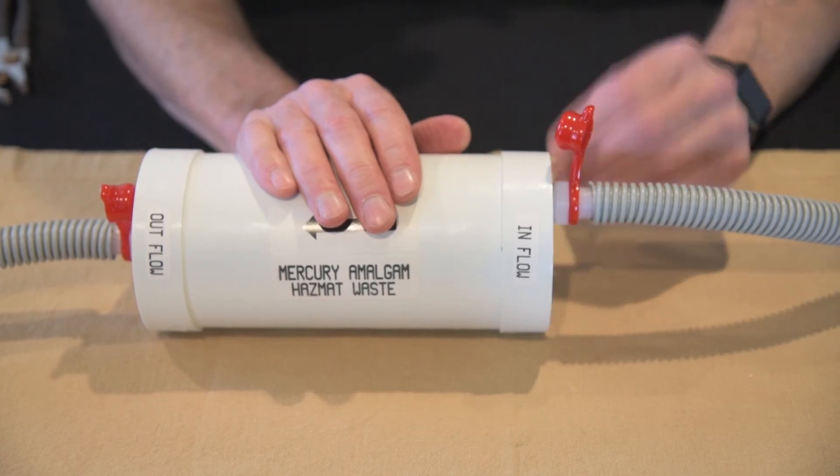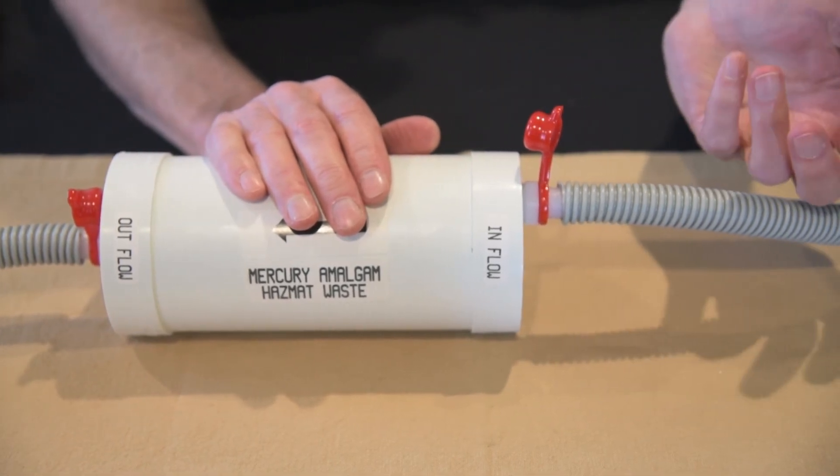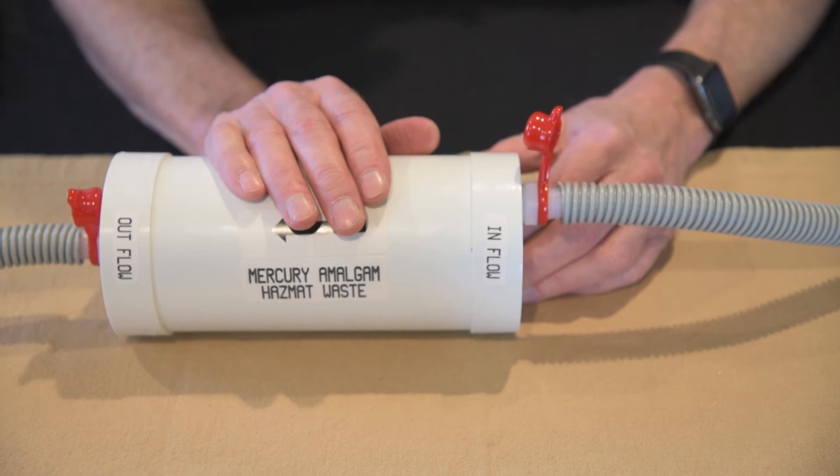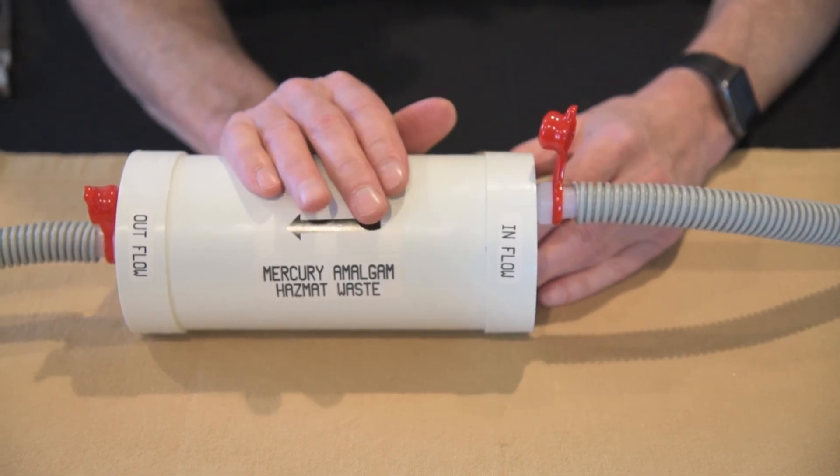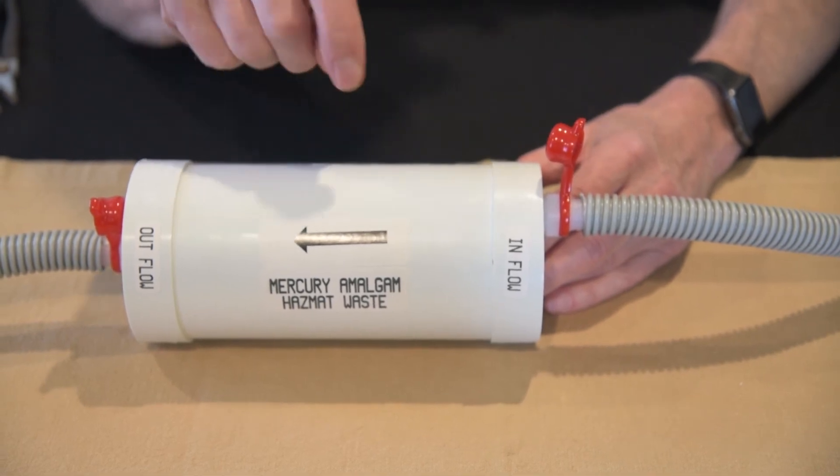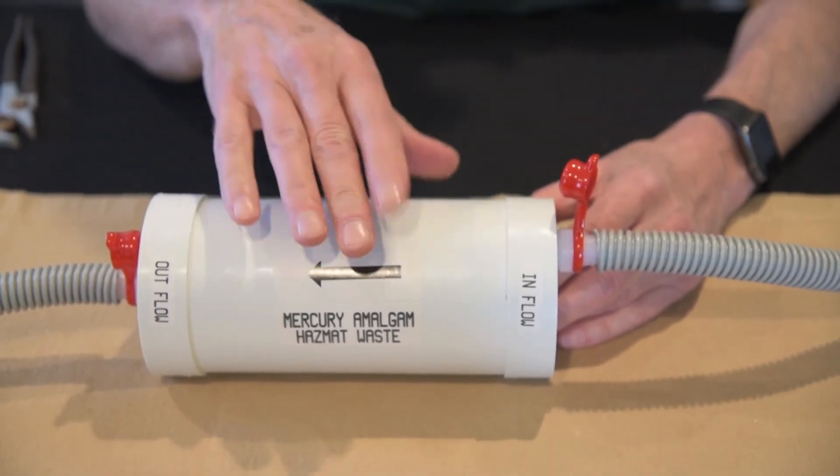The second thing is the sediment trap. Is the sediment trap full? Does it need to be replaced? So you do those two things first and check your vacuum power again. And if it is still weak, you know that you need to replace the filter.